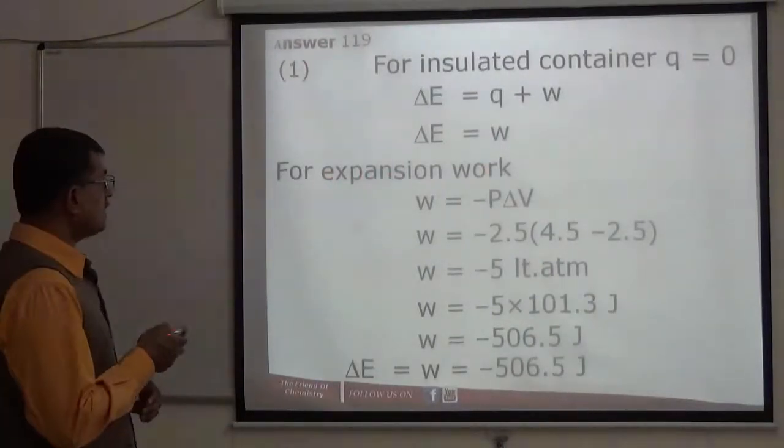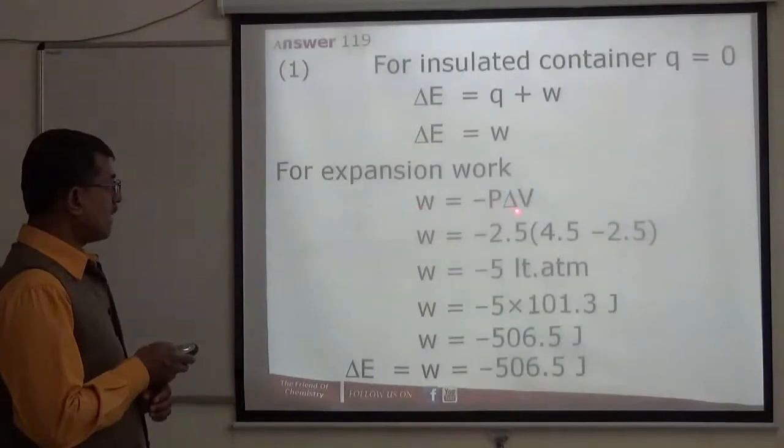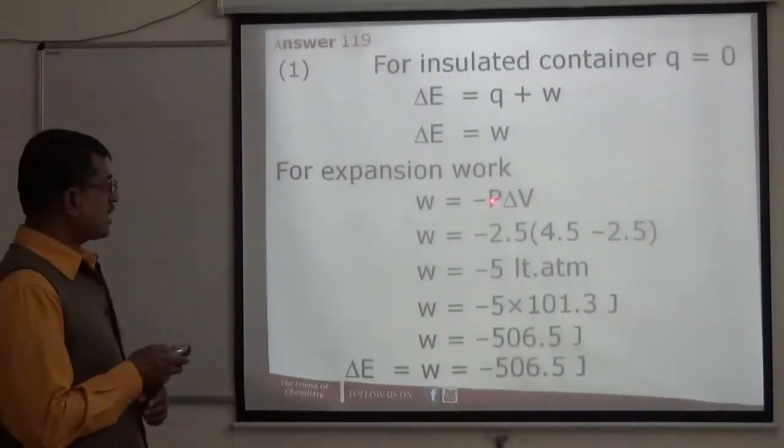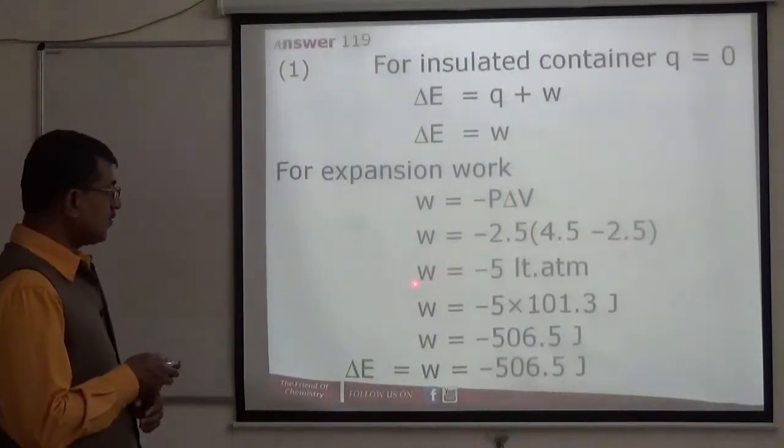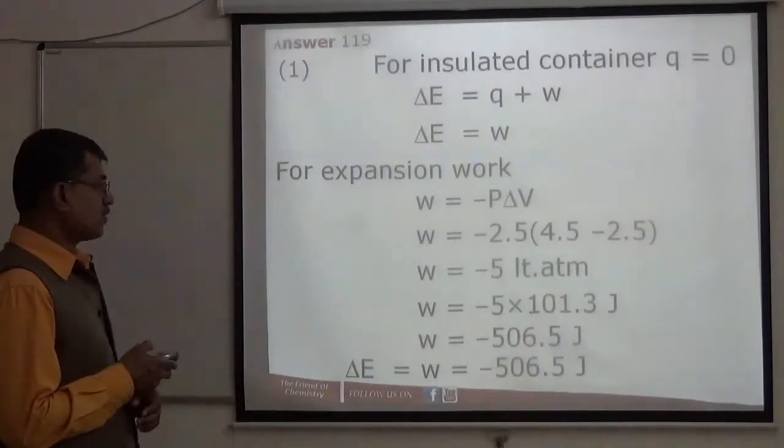For expansion work, w equals minus P delta V. Pressure is given as 2.5 atmosphere. Calculate the change in volume. Work done will be minus 5 liter atmosphere.